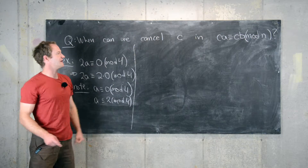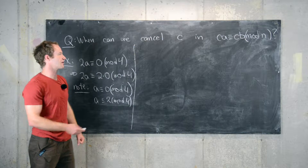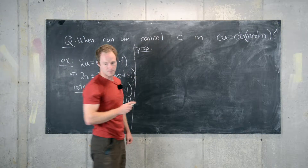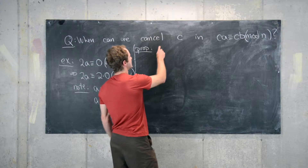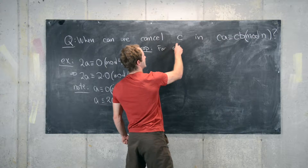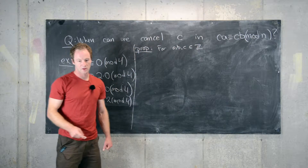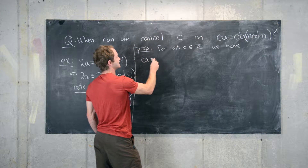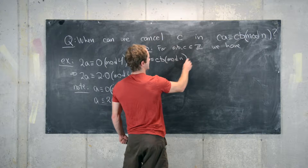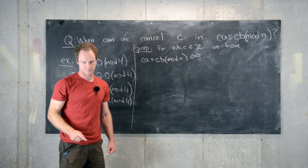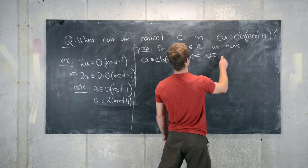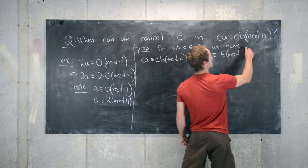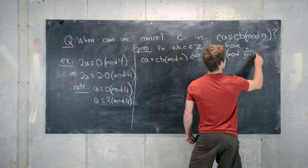So let's get into what we need to be true for this cancellation to take place. We'll write it as a proposition: for A, B, C, N in Z, we have CA is congruent to CB mod N if and only if A is congruent to B mod N divided by the GCD of N and C.